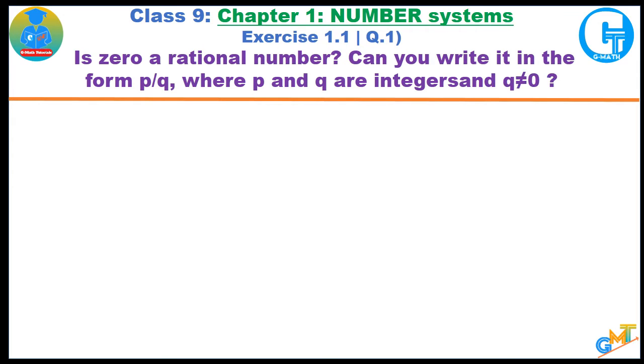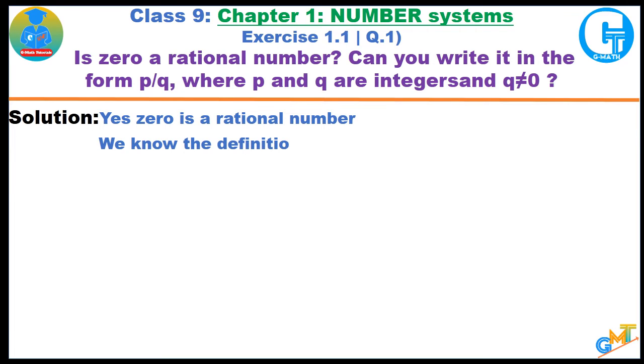Solution: Yes, zero is a rational number. We know the definition of rational number as the number which can be expressed in the form of p upon q.